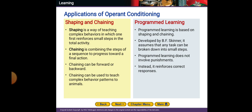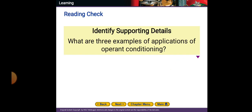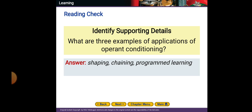For example, with the maze for rats, I put the reward at the end of the maze — the rat will learn the way better when it can see its reward at the end. Programmed learning is based on shaping and training developed by Skinner. It assumes that any task can be broken down into small steps. Programmed learning does not involve punishment; instead it reinforces correct responses. The three examples of applications of operant conditioning are shaping, chaining, and programmed learning.